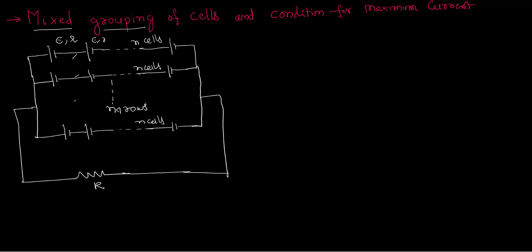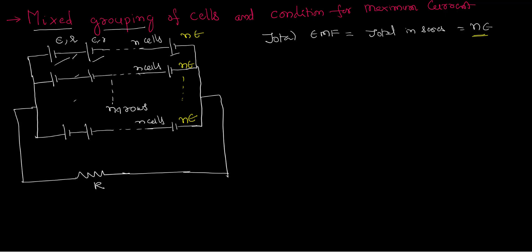First, let's find the current in this circuit. For that we need to know the total EMF. Each row has n cells of EMF e in series, giving a total EMF of ne per row. Since all m rows are connected in parallel, the EMF does not add up — it stays the same value. So the total EMF of the combination is ne.